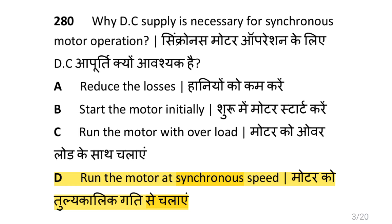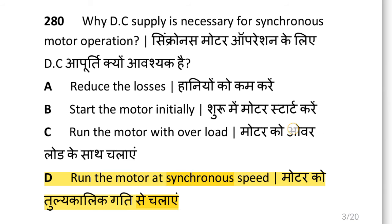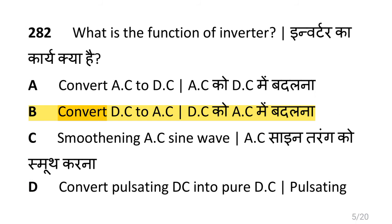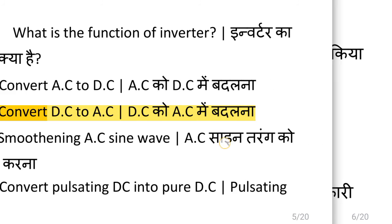Why DC supply is necessary for synchronous motor operation? That is to run the motor at synchronous speed, which acts as both inverter and converter, that is synchronous converter. What is the function of inverter? That is to convert DC to AC.